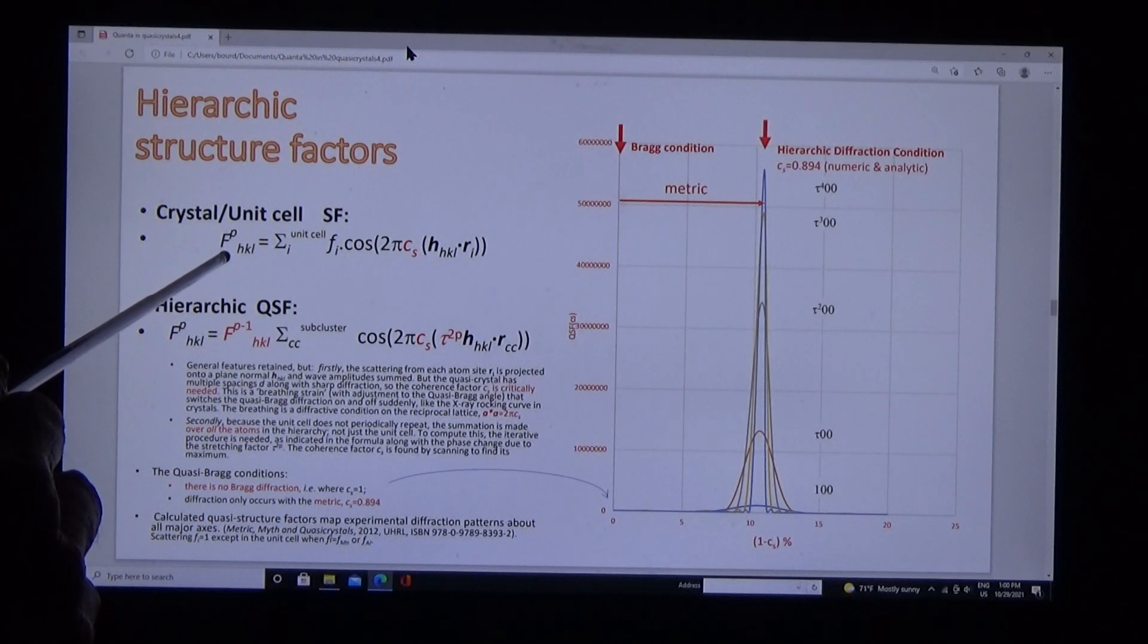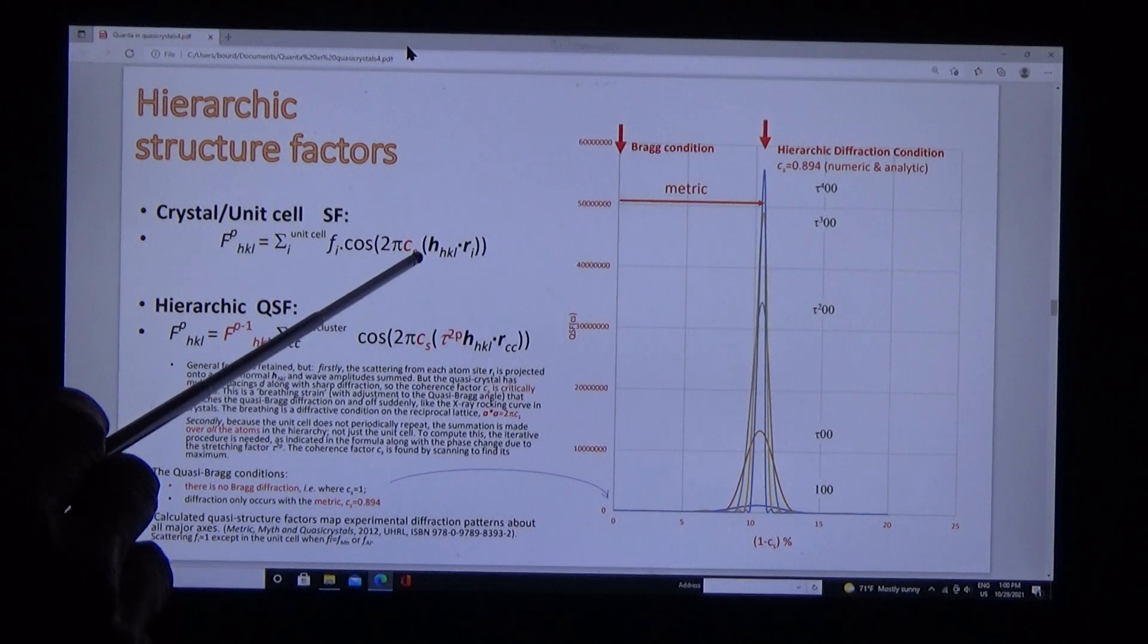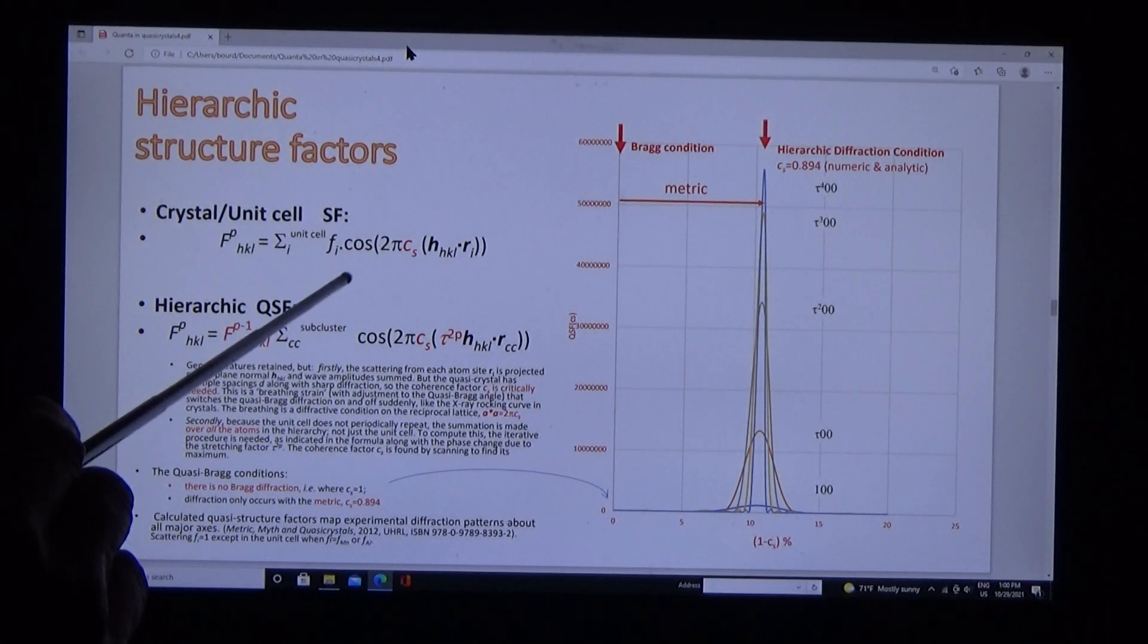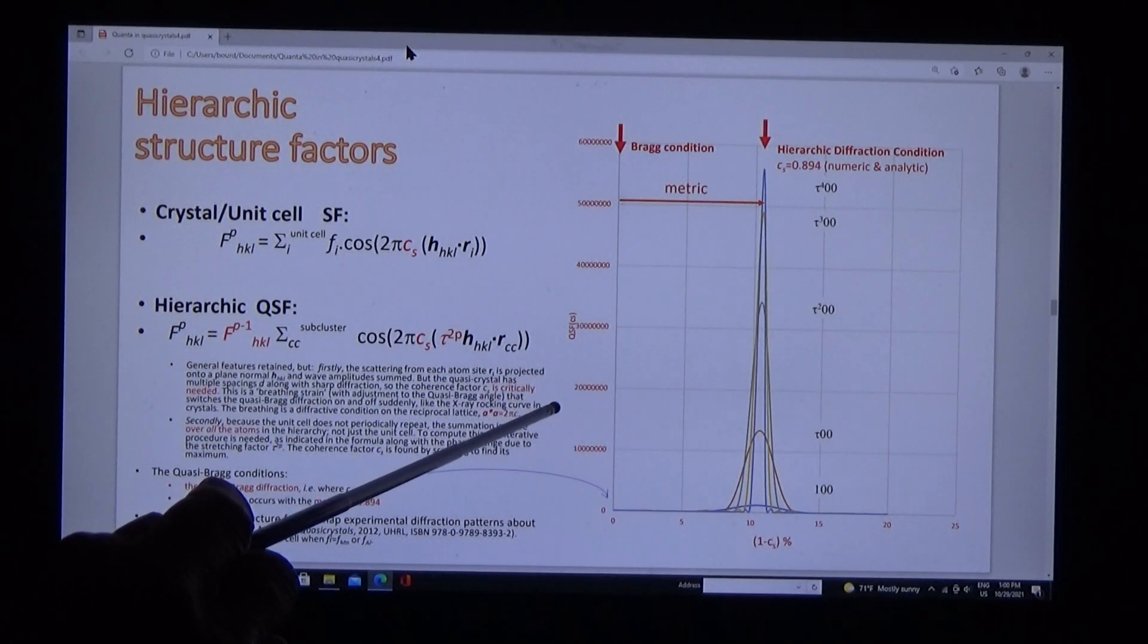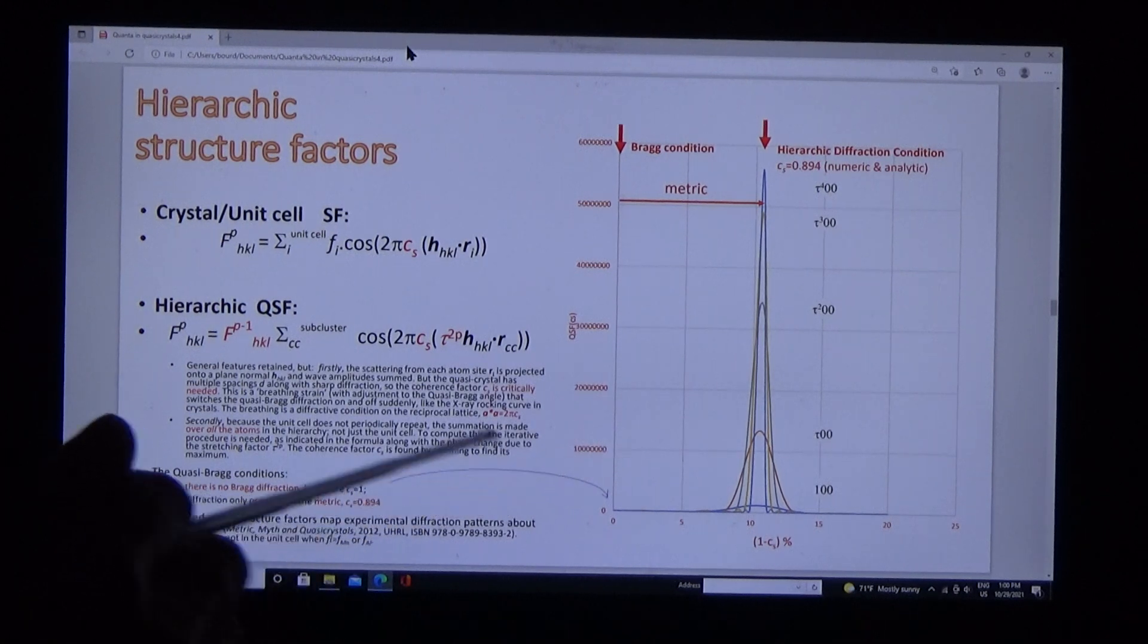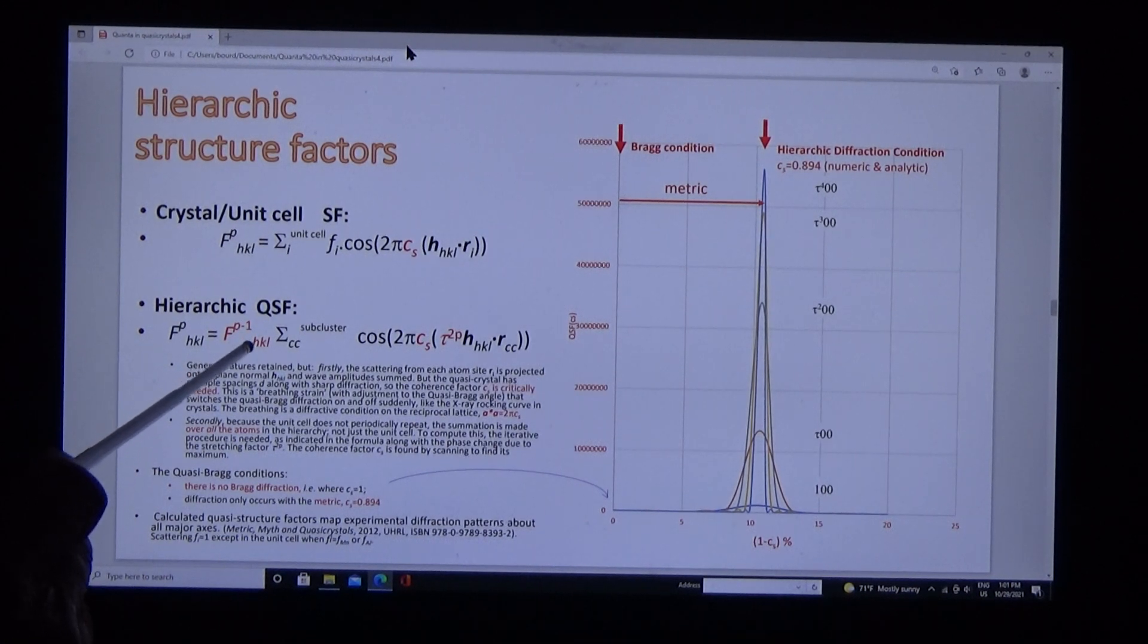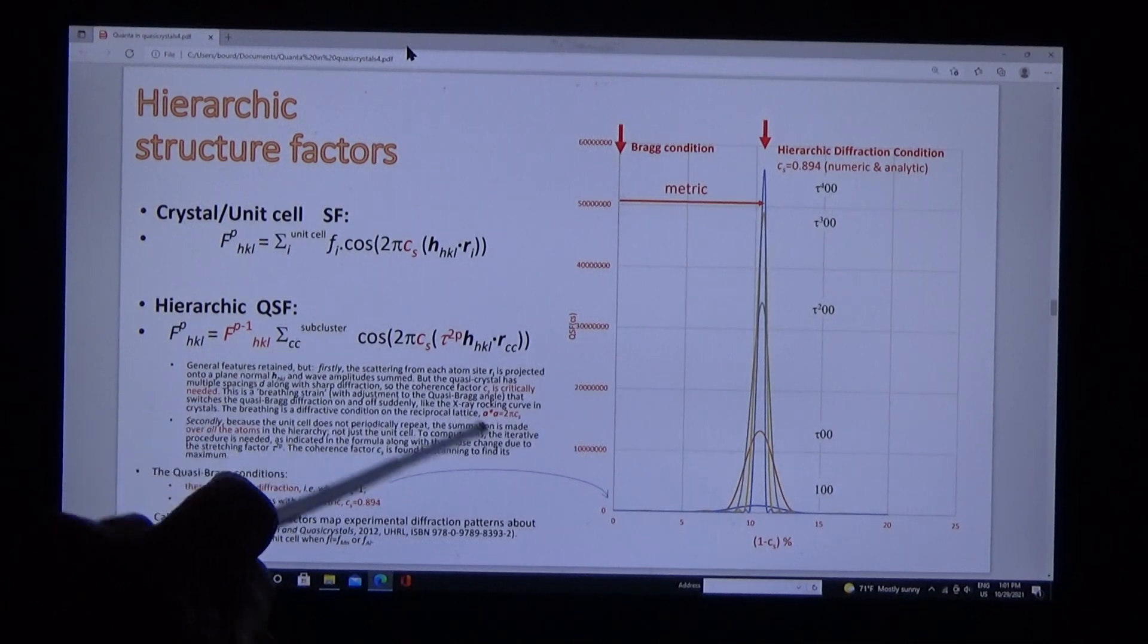For the quasicrystal, we make two adjustments. Firstly, because we have multiple d-spacings in the structure, as we saw in the images, we include a coherence factor. Secondly, because our unit cell is not periodically repeating, we sum over the whole quasicrystal, and we do this iteratively. The QSF for a supercluster order p equals the QSF order p-1 multiplied by this function of the stretching factor.